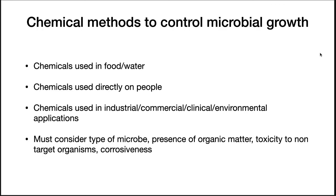Many different chemicals also have antimicrobial properties and can control microbial growth, finding uses in food, water, on people, and in commercial enterprises. When using chemical treatments, it is crucial to consider the type of microbe, the presence of organic matter, the toxicity to non-target organisms, and the corrosiveness of the treatment. If you don't consider the microbe you're trying to treat, you won't use the right disinfectant. Organic matter inhibits these chemicals and makes them less effective. You also need to worry about non-target organisms, and corrosive treatments can degrade surfaces.